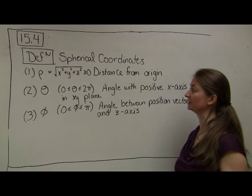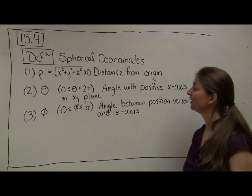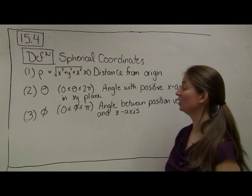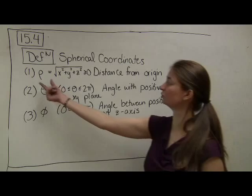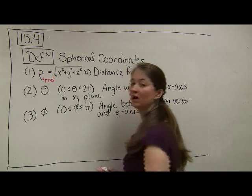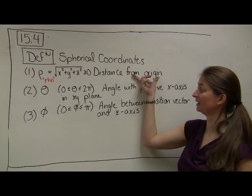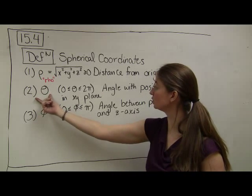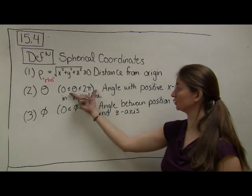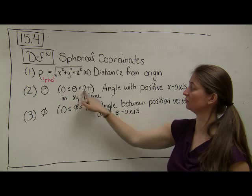Next I want to introduce spherical coordinates. The spherical coordinate system, as the name suggests, makes it really easy to come up with equations for spheres. There are three coordinates we use. The first is rho — the Greek letter R-H-O — which is analogous to our radius in polar coordinates. Rho is the distance from a point to the origin. Then theta, our next coordinate, is exactly the same as in polar coordinates: it's the angle that you make with the positive x-axis in the x-y plane, going from 0 to 2 pi.